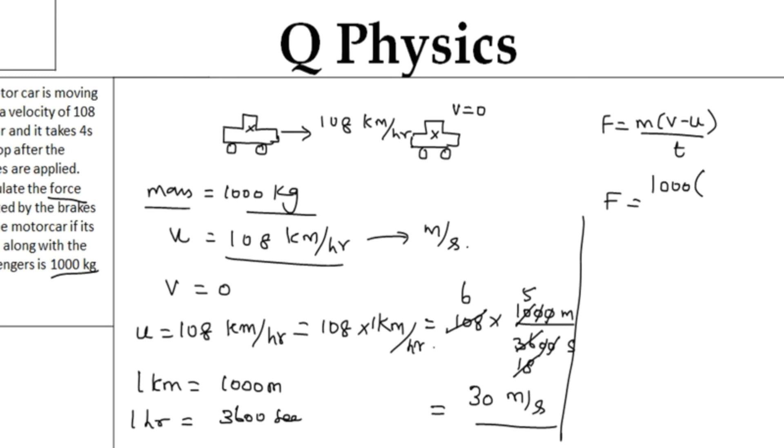The final velocity will be equal to zero minus the initial velocity is 30 meter per second. That is divided by the time t. The time it acts is 4 seconds, so I am dividing it by 4.